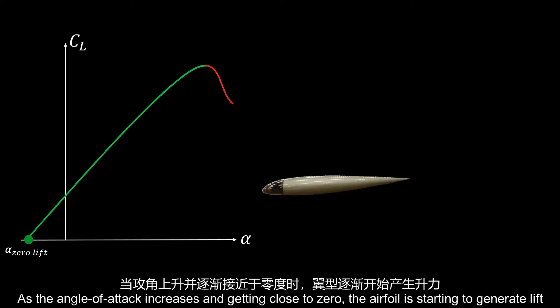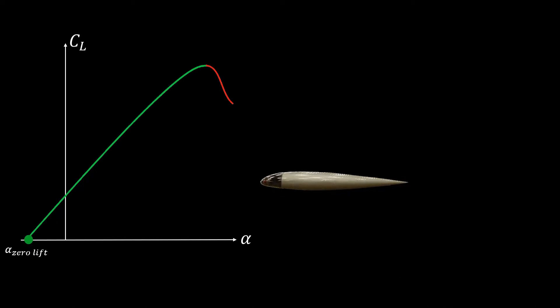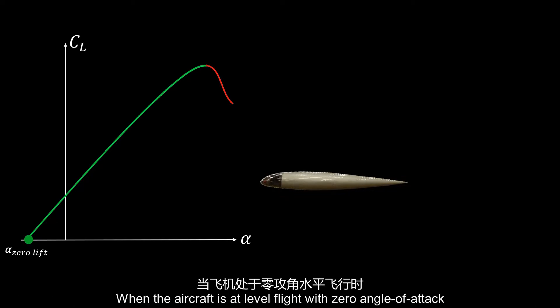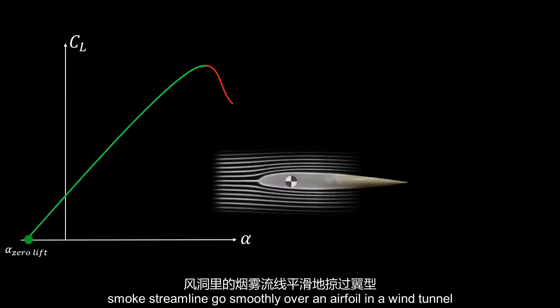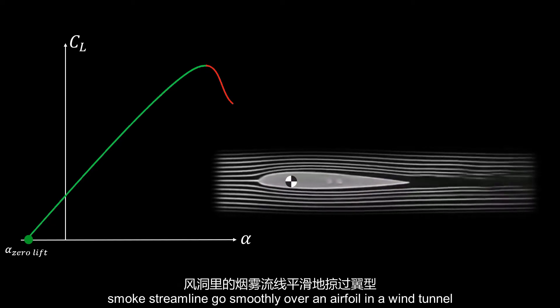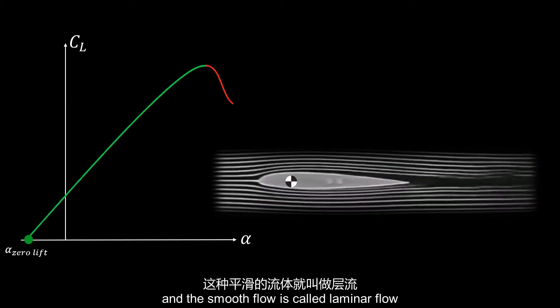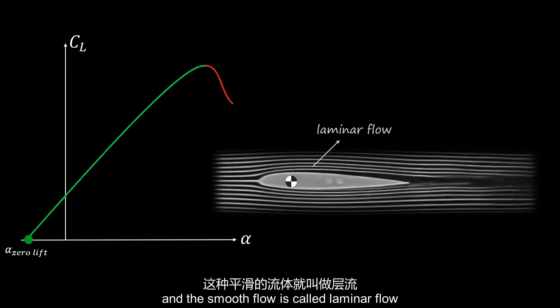As the angle of attack increases and gets close to zero, the airfoil starts to generate lift. When the aircraft is at level flight with zero angle of attack, smoke streamlines go smoothly over the airfoil in a wind tunnel, and this smooth flow is called laminar flow.